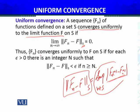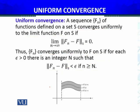Thus, {F_n} converges uniformly to F on S if for each epsilon > 0, there is an integer N—now this integer N depends only on epsilon, not on x belonging to S—such that ||F_n - F||_s < ε if n ≥ N. The difference between uniform convergence and pointwise convergence is that for every epsilon greater than zero, N depends only on epsilon, not on x belonging to S.